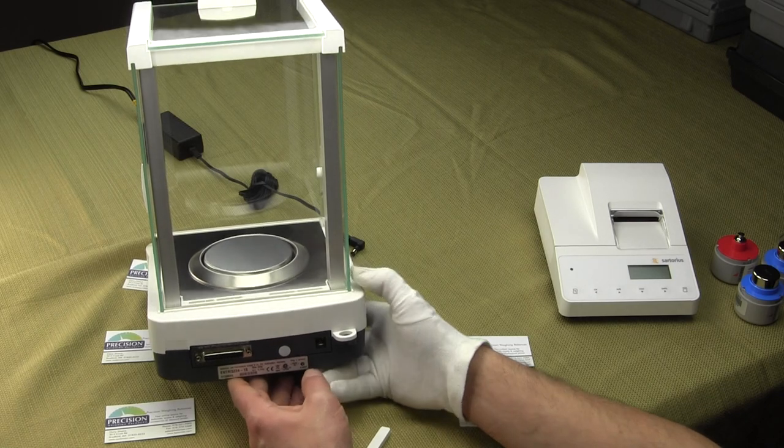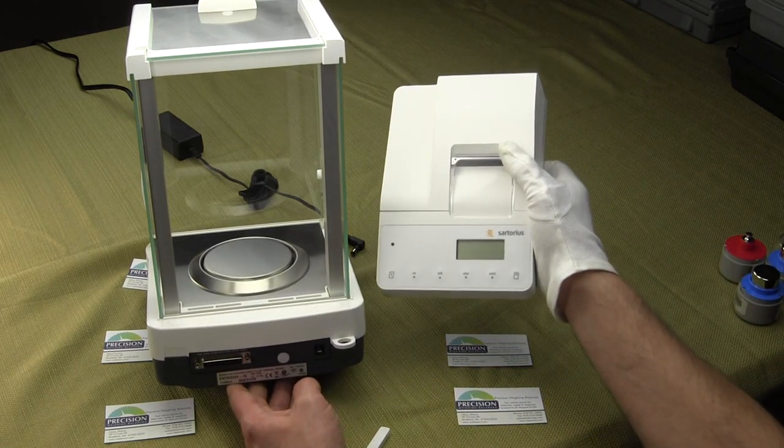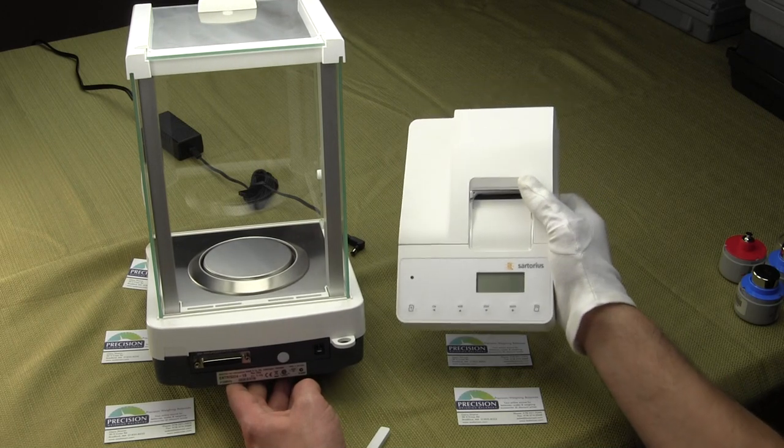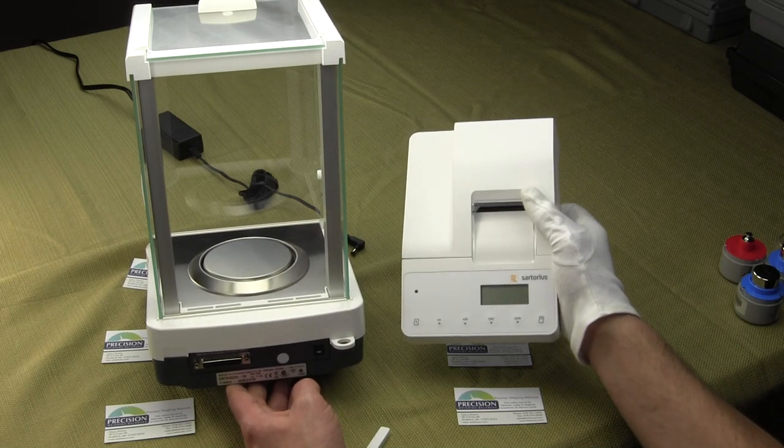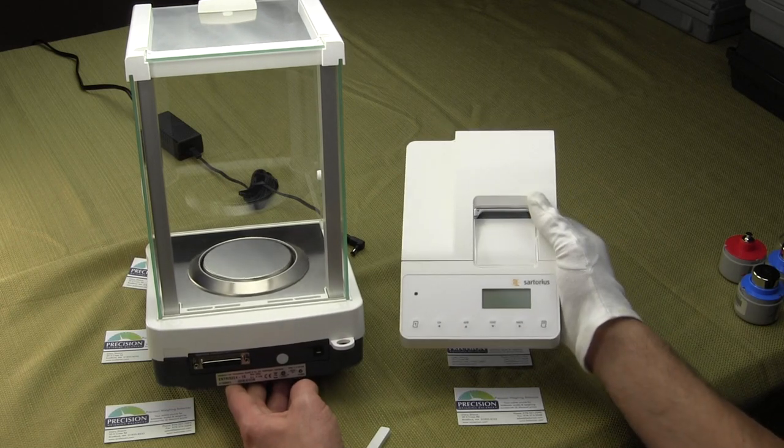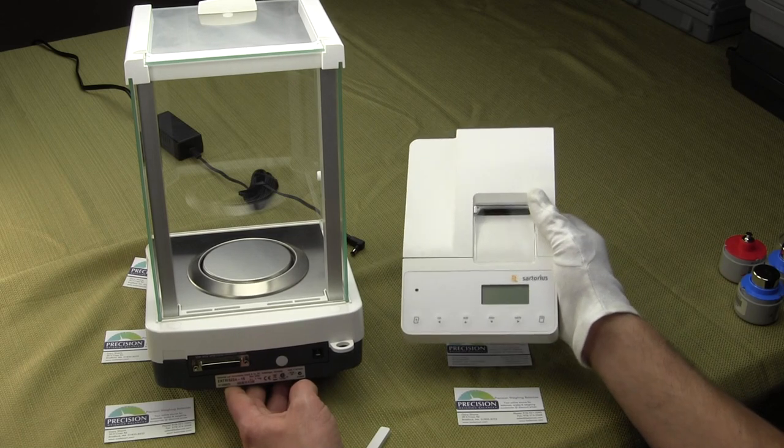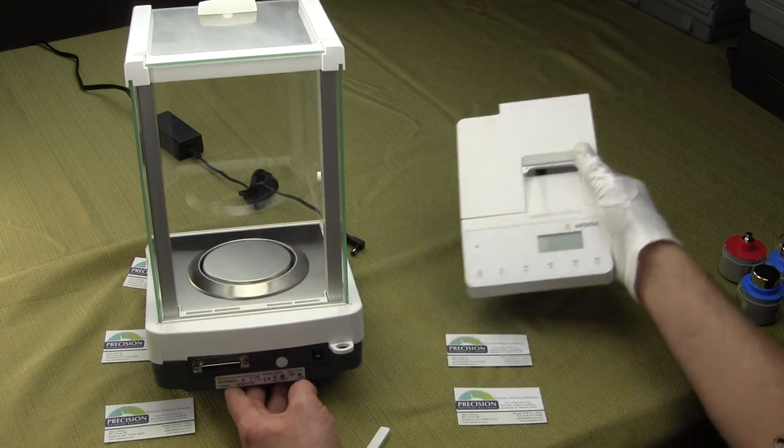On the rear of the balance, we have a 25-pin serial interface. This would be used if you wanted to connect the balance to an optional Sartorius YDP-20 printer, which we also offer. If you're required to be GLP compliant, you need traceable paperwork on what you're actually weighing. It would record the date, the time, the serial number of the unit, along with the weight.